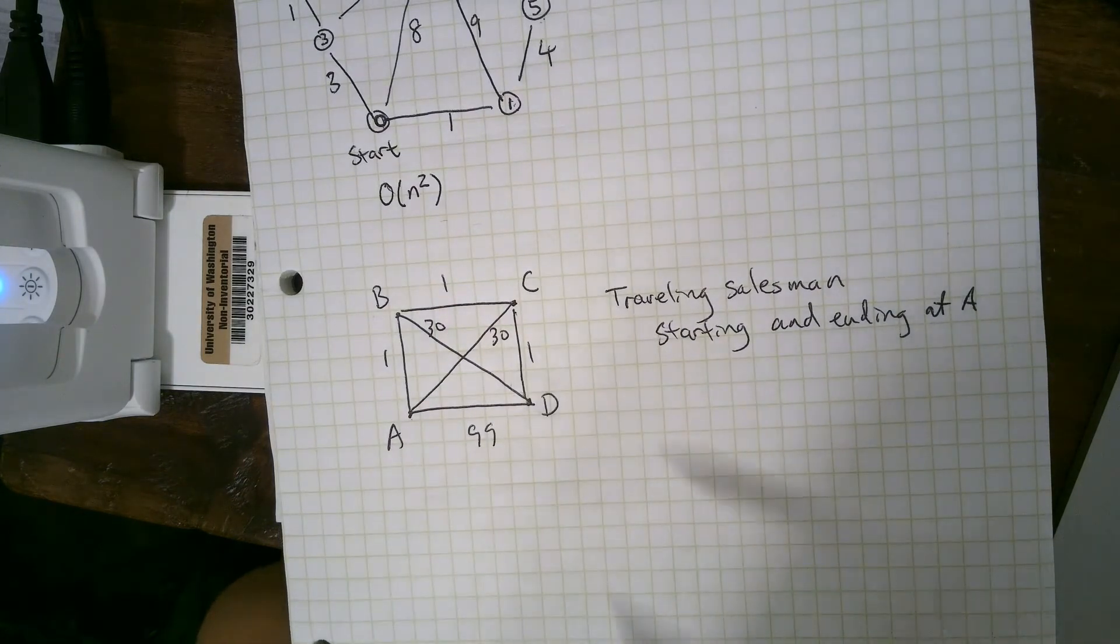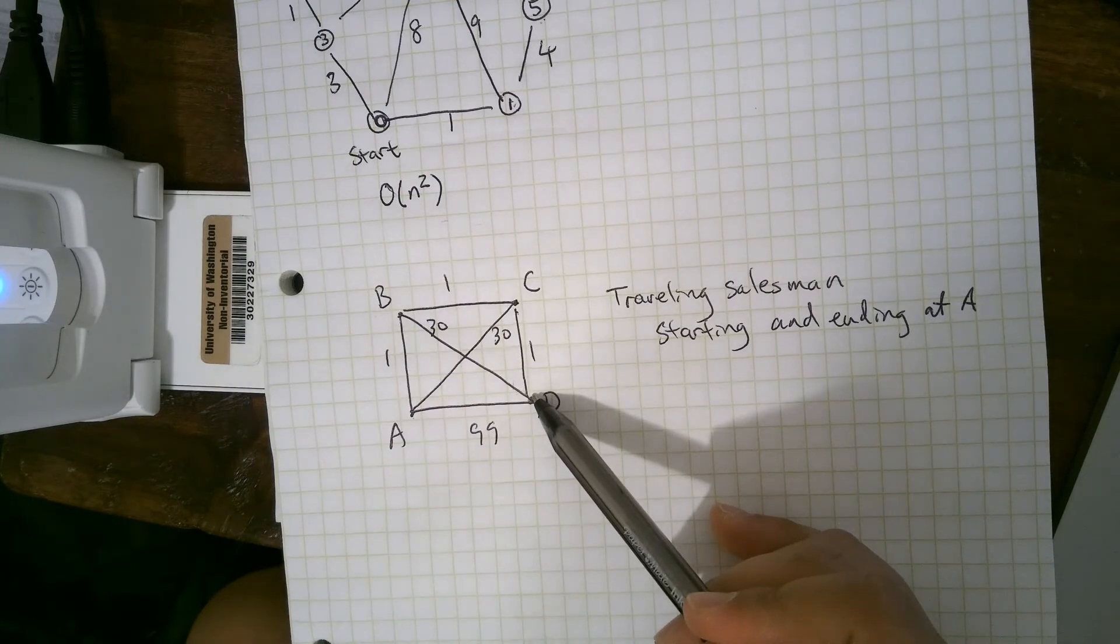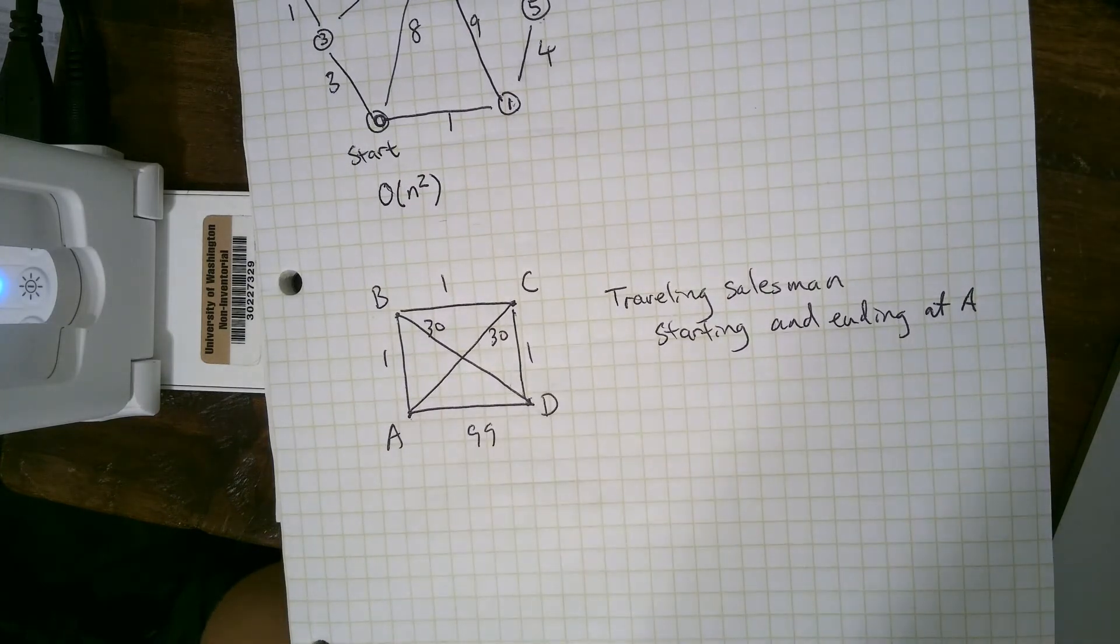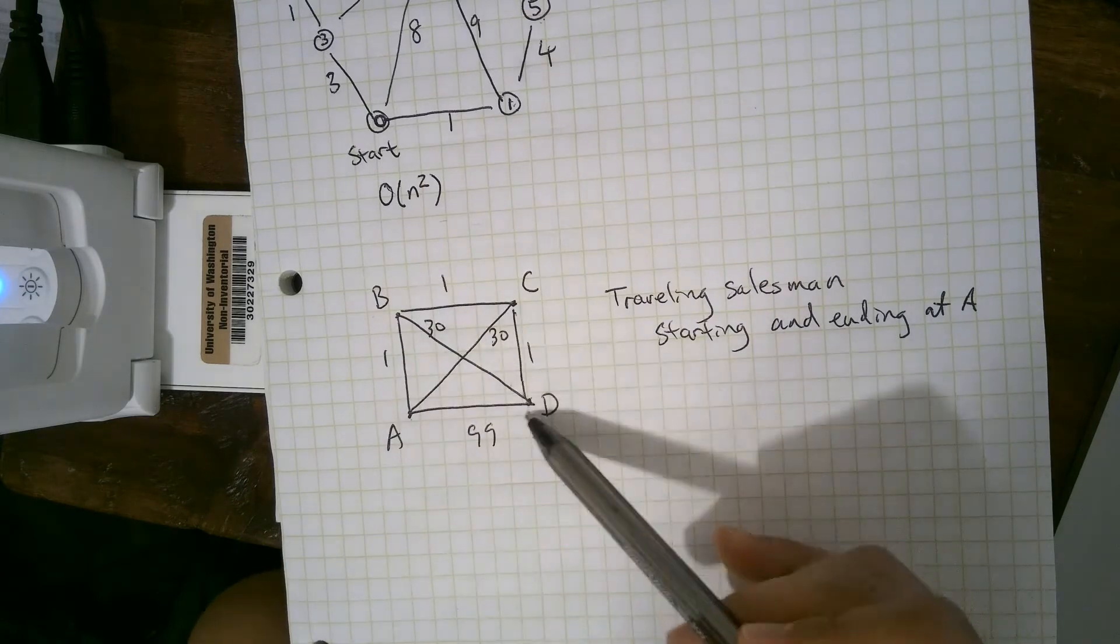But because you can't repeat any vertices, if to get back to A, you have to go along this 99. And that's no longer the shortest traveling salesman path.